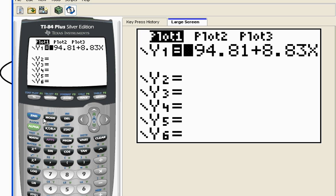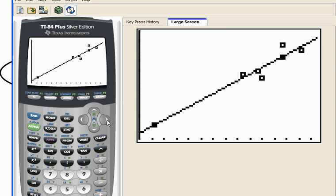So if I were at my home screen, I just hit y equals to get here, and I typed in my equation into the first slot right here. And when I look at the graph, right there is my line of best fit.